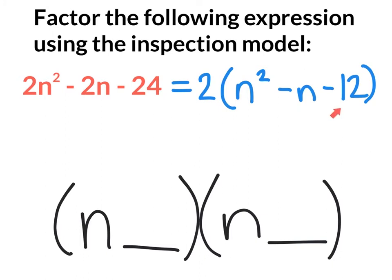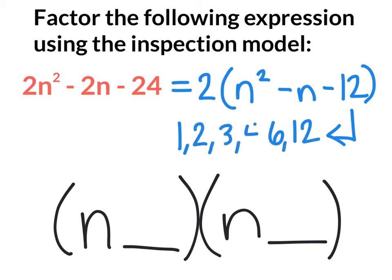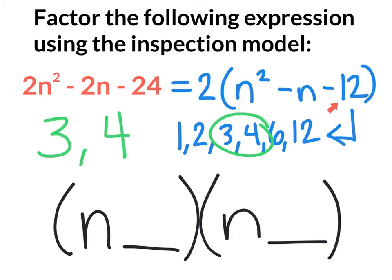Now we have to find two numbers that multiply to give negative 12 and add to give negative 1. Start by listing the factors of 12. We're concerned with the two factors 3 and 4, so I can circle those and write them on the side. These factors have to multiply to give negative 12 and add to give negative 1, so I need to add a negative sign to make that happen. Our final answer will be 2 multiplied by n plus 3, all times n minus 4.